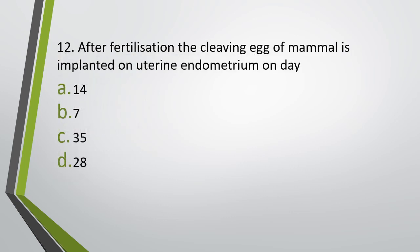Question number twelve. After fertilization, the cleaving egg of a mammal is implanted on the uterine endometrium on which day? 14th day, 7th day, 35th day, or 28th day. Correct answer is option B — it is implanted on the 7th day after fertilization.